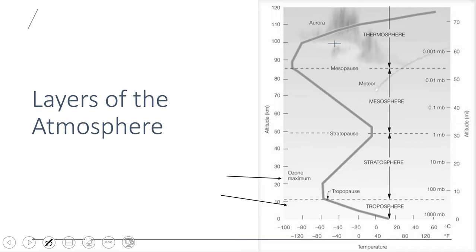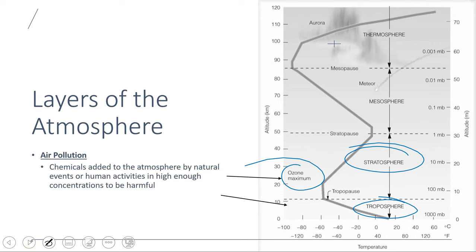The layers of the atmosphere are also review for us. Down here where we live in the troposphere is where most of the gases in the atmosphere reside, where all the weather and all living organisms are. Up in the stratosphere, another important topic in the air pollution unit, we have that protective ozone layer.